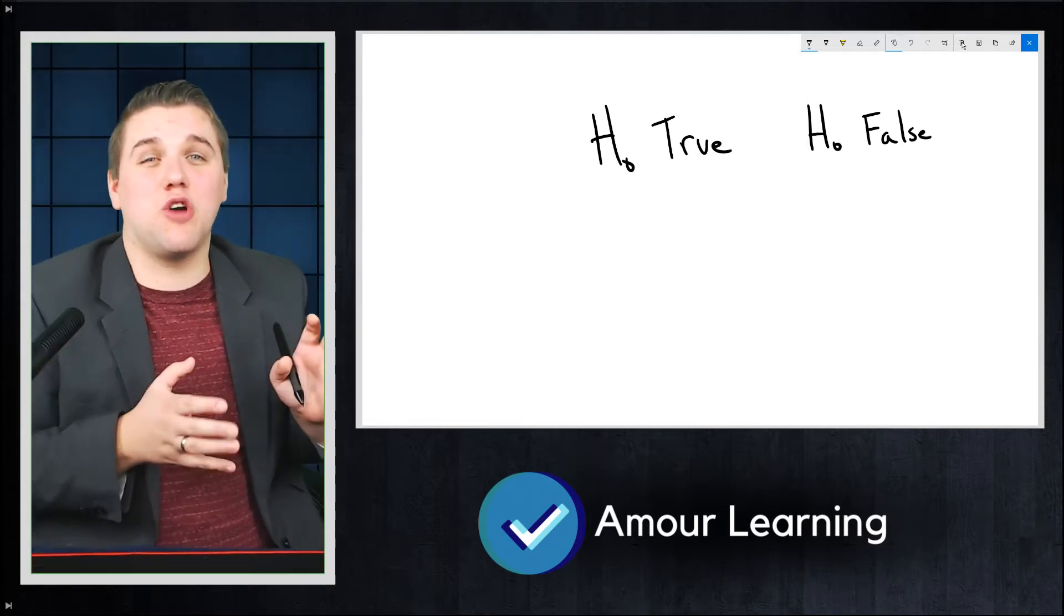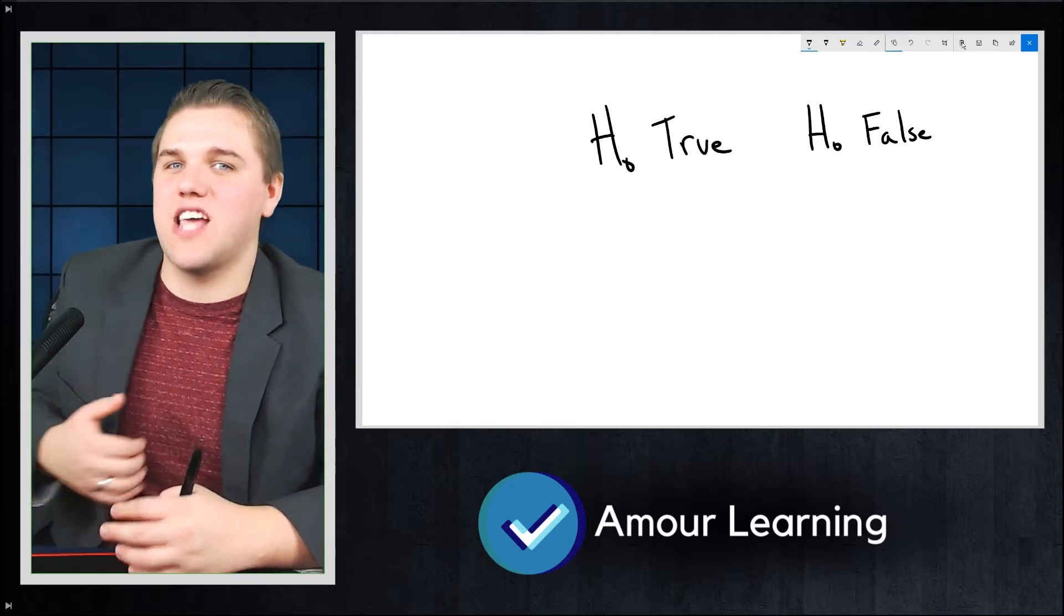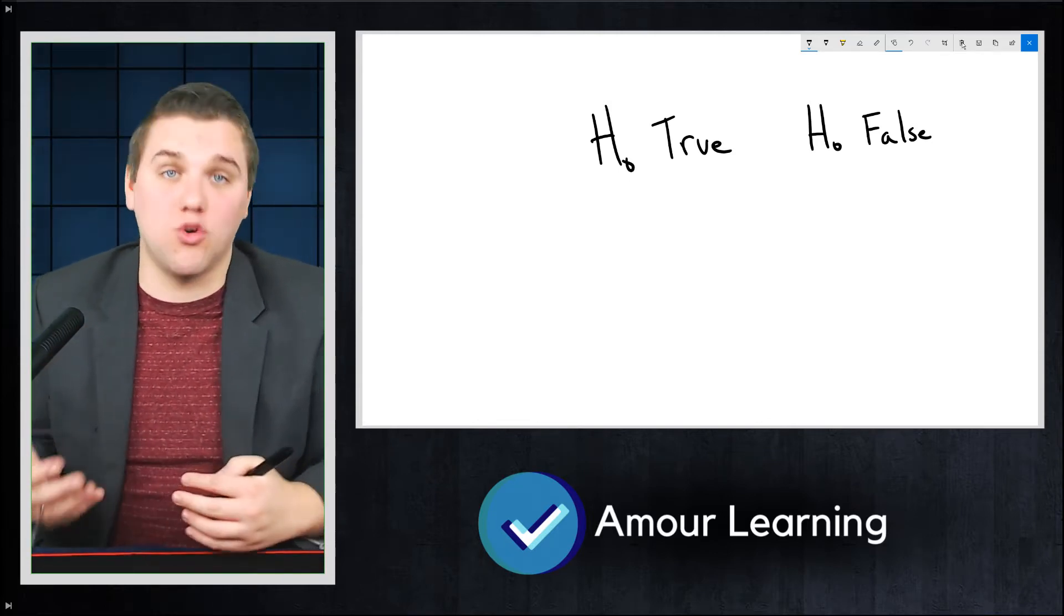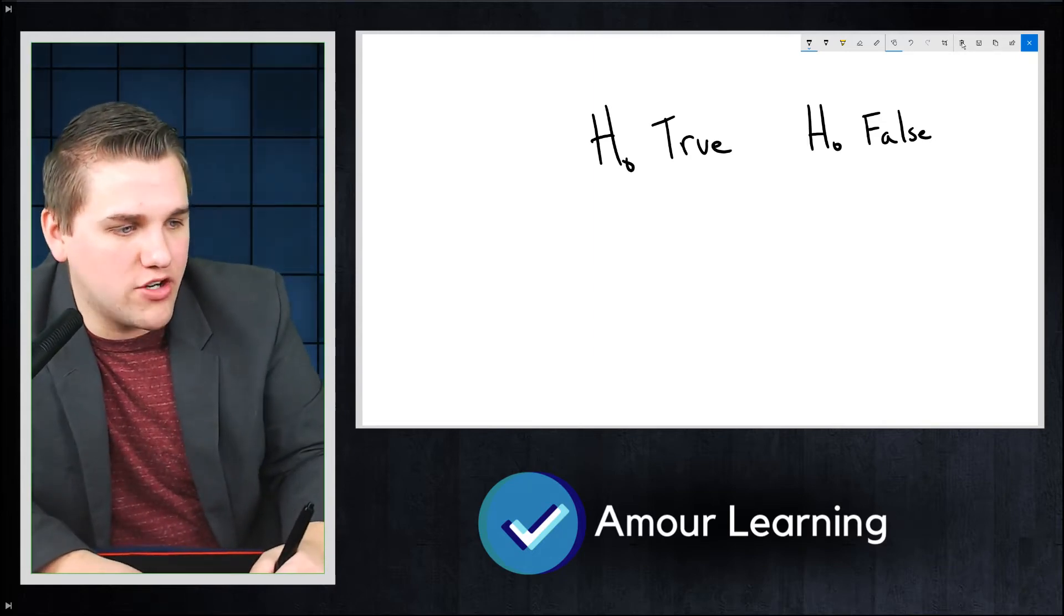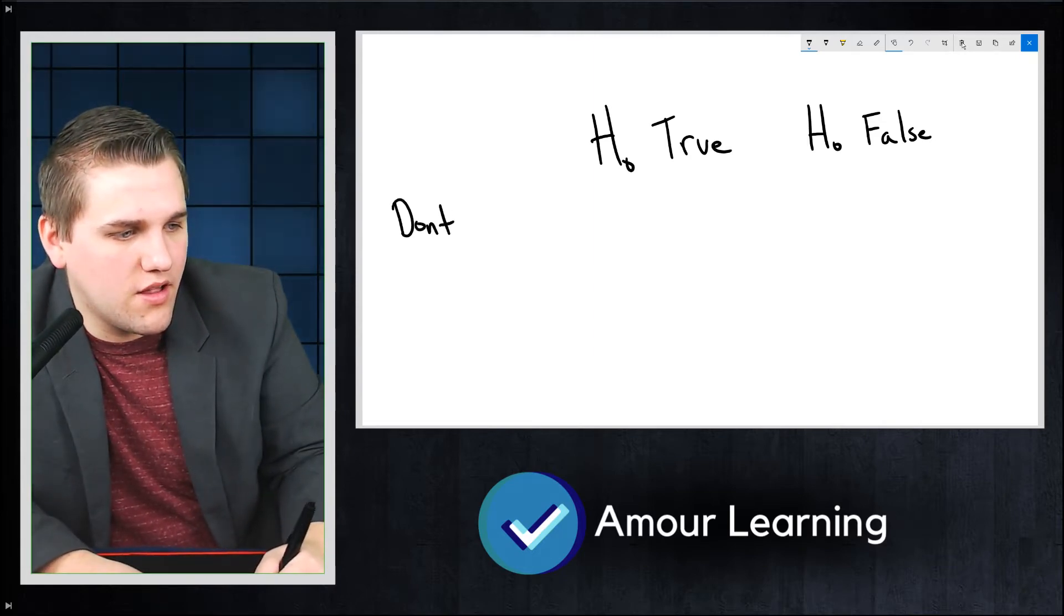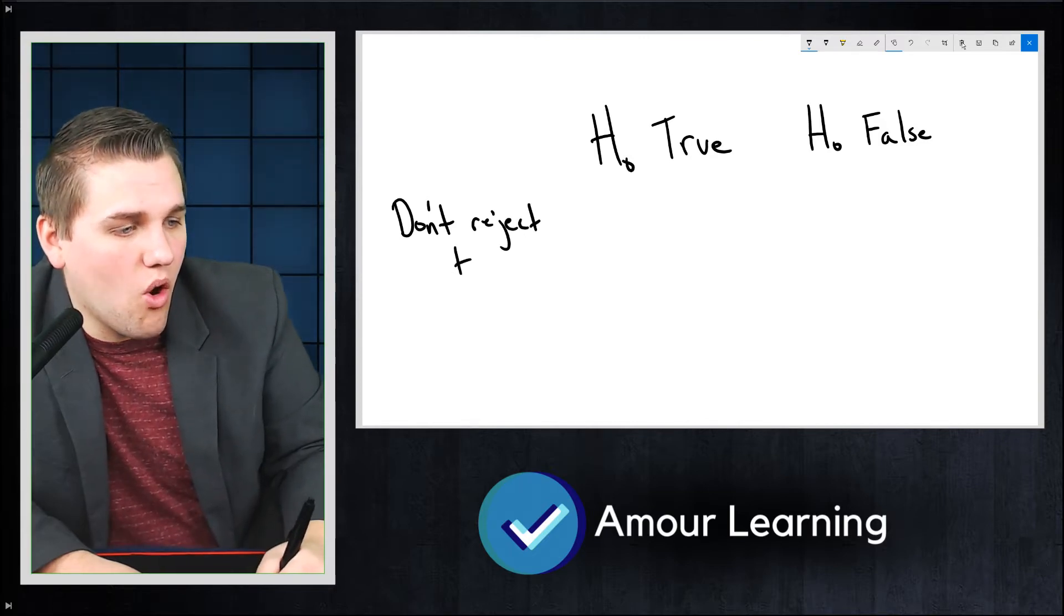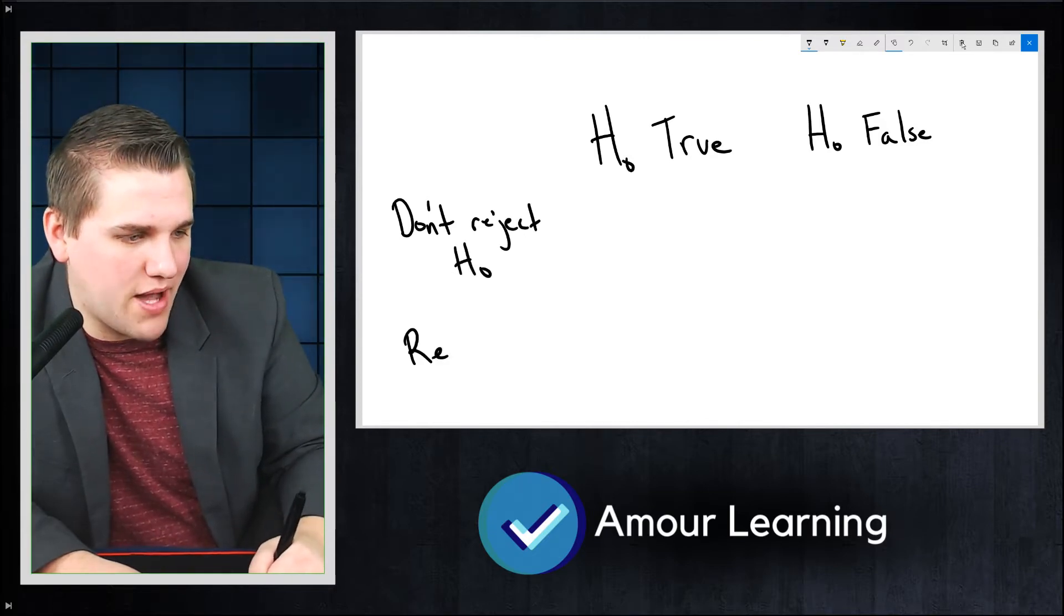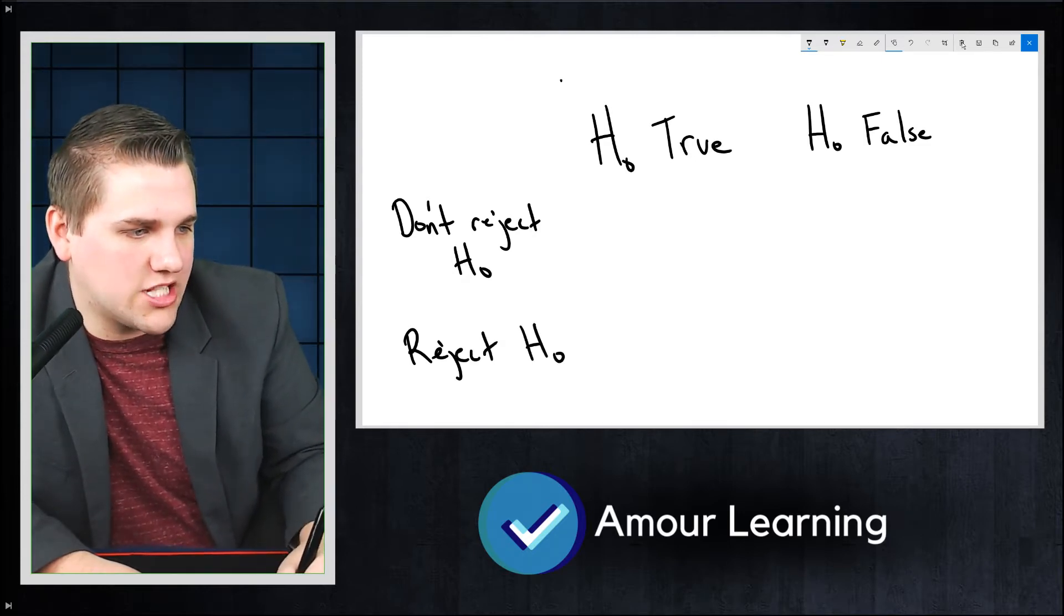Now, it's impossible to determine which is which, and so we use statistical experiments to help guide us in the right direction. So when we do a statistical experiment, we either don't reject the null hypothesis, or we reject the null hypothesis. Those are the two possibilities for an experiment.